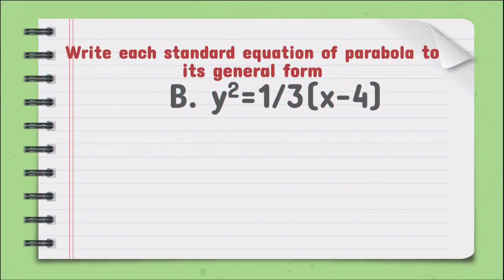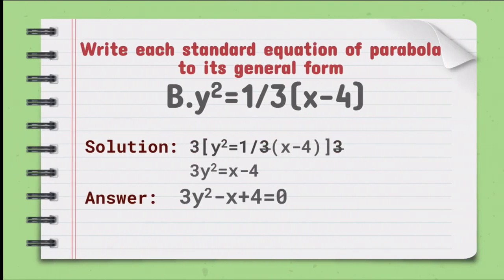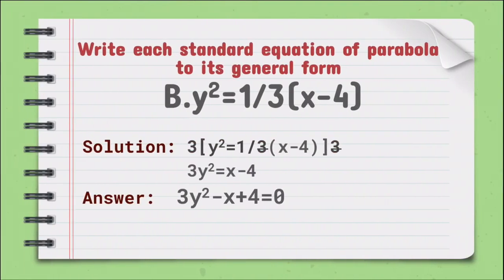For letter B, the given equation is y squared is equal to 1/3 times the quantity x minus 4. Since there is a fraction in the given equation, all we have to do is first multiply both sides by 3. So y squared times 3 is equal to 3y squared. Then 1/3 times 3 — the 3 will be cancelled — so it would be 1 times the quantity x minus 4.